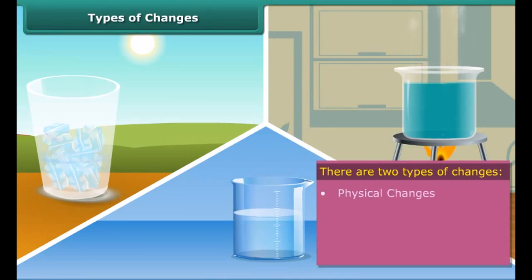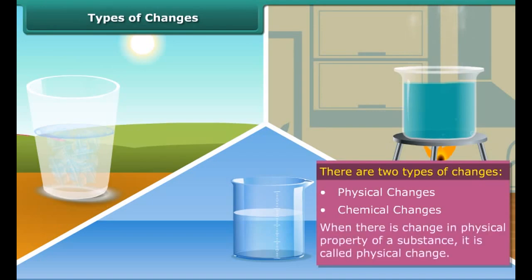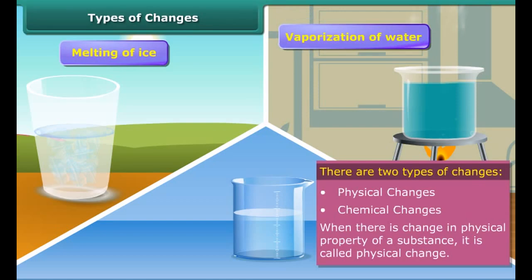Types of changes: Changes are of two types: physical change and chemical change. In this module you will study physical changes. When there is a change in properties such as shape, size, color, and state of a substance, it is called physical change. Examples of physical change are melting of ice, vaporization of water, and dissolution of sugar or salt in water.